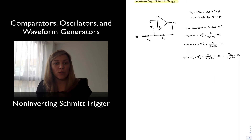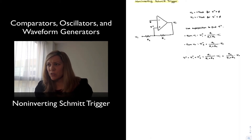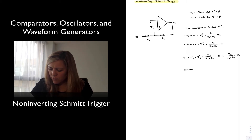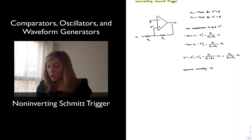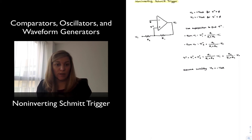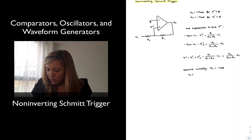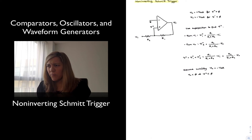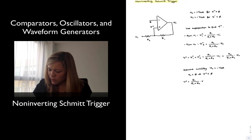Now let's see what happens. We're going to look at the two possible states for the output — when the output is high and when the output is low. We're going to assume initially the output is low, so negative Vsat. If the output is low, we presume the input signal is also going to be low. The important thing is that Vplus is going to be negative, meaning Vout less than zero implies Vplus must be less than zero. Vplus equals R1/(R1+R2)·Vin plus R2/(R1+R2)·Vout.